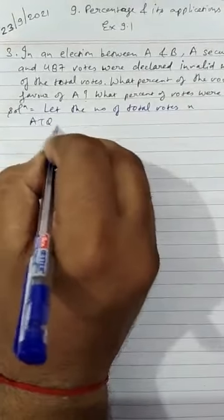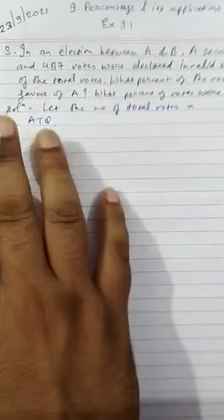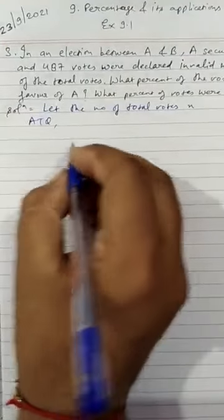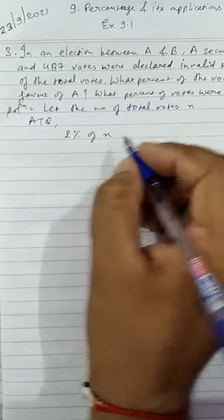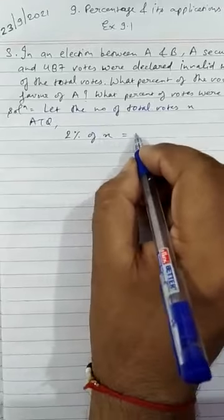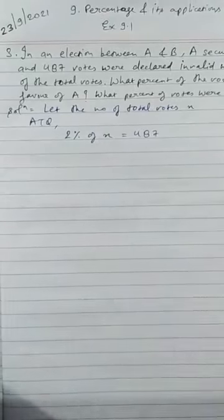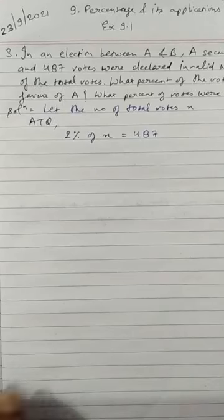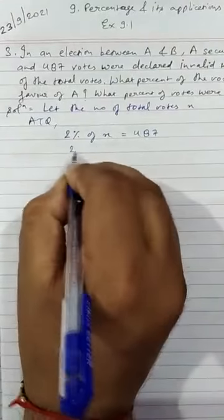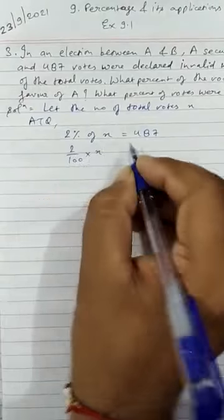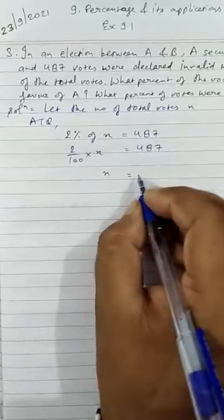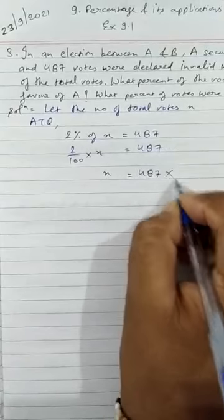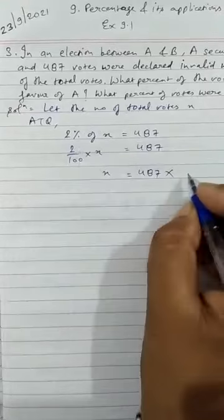According to the question, 2% is the percent of invalid votes. So we can write 2% of the total number of votes, X, equals 487. This gives us 2/100 × X = 487, and X = 487 × 100/2.